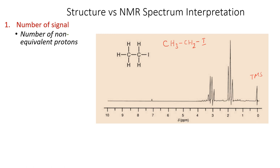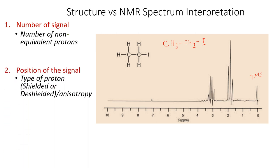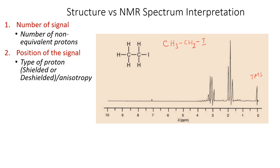In the particular molecule there are two sets of equivalent protons. Next we look at the position of the signal. The position of the first signal is between 1.5 and 2, and the second signal's position is around 3. The position of the signal helps us determine whether the protons are shielded or deshielded protons with respect to each other.